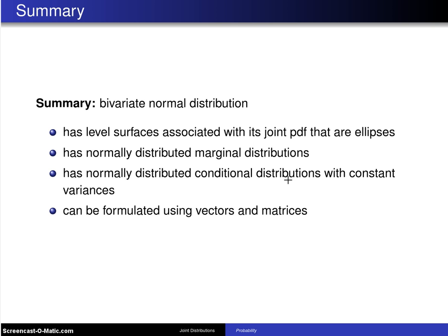In addition, the bivariate normal distribution has a tractable joint moment generating function.